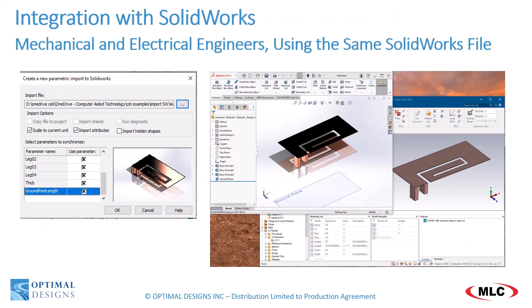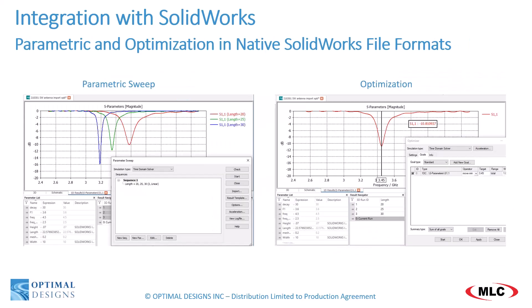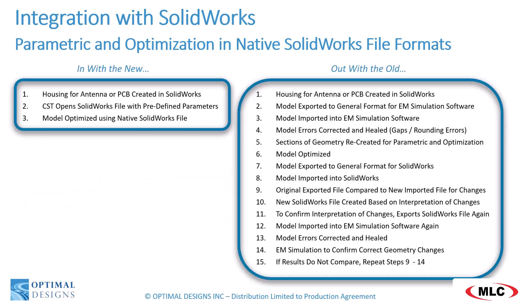A key feature for CST is the Live Link feature to SOLIDWORKS. In this parameter import feature, CST can open a native SOLIDWORKS file with parameters, read these parameters, and make changes directly to the SOLIDWORKS file. This allows the CST engineer to conduct both parametric and optimization analysis using parameters built inside the SOLIDWORKS file. This is a new paradigm, simplifying the number of steps for SOLIDWORKS engineers to collaborate with CST engineers while also reducing human error in the process.